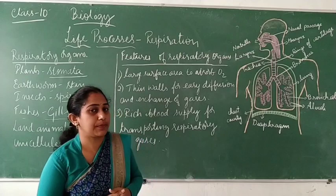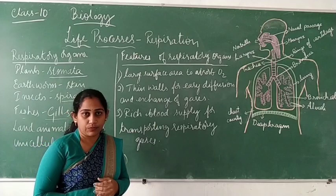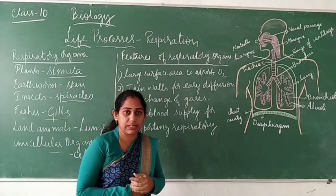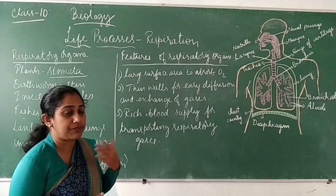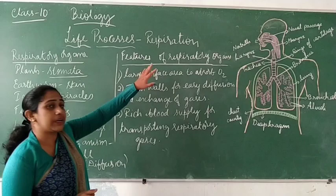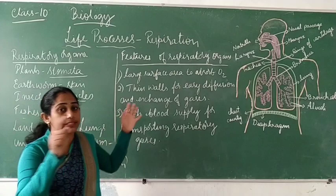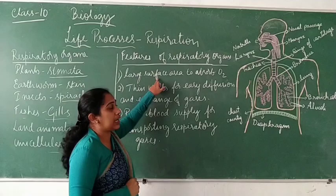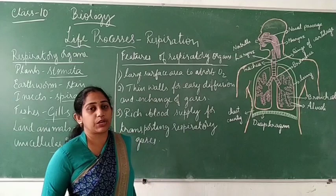For the efficient exchange of gases, all respiratory organs should have certain features. The first feature is that all respiratory organs should have a large surface area to absorb oxygen. A large area of absorption is needed so that more and more oxygen can be absorbed.